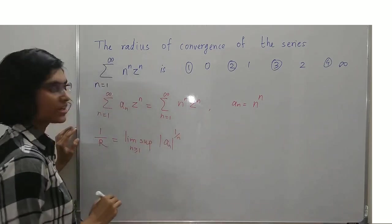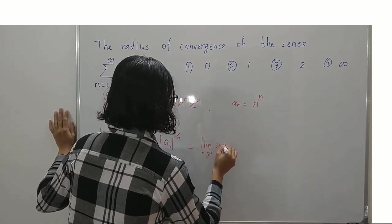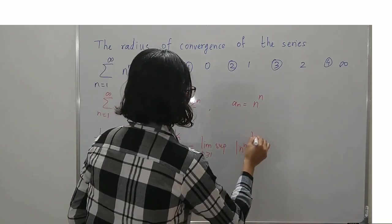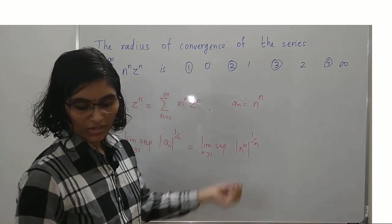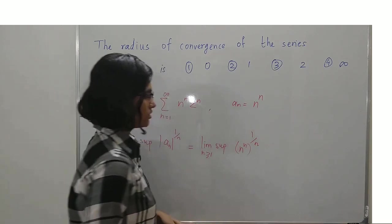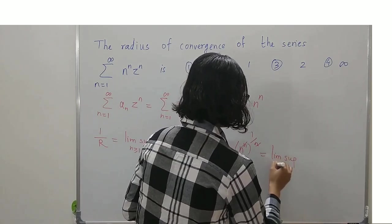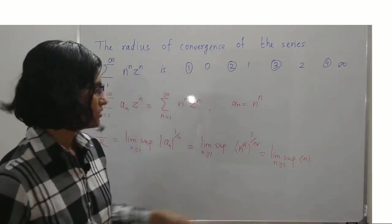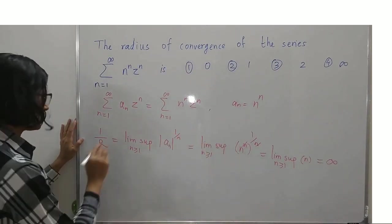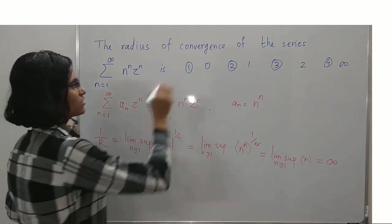So this is the limit supremum of |n^n|^(1/n). Since a_n = n^n is a positive quantity, the modulus is just itself. The n's cancel, giving limit supremum of n, which is infinity. Therefore 1/r = infinity, which implies r = 0. So the radius of convergence is 0, and this is the correct option.